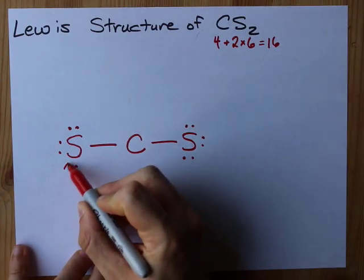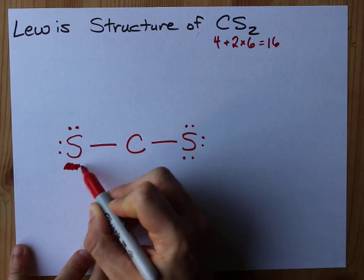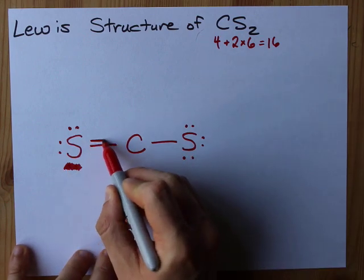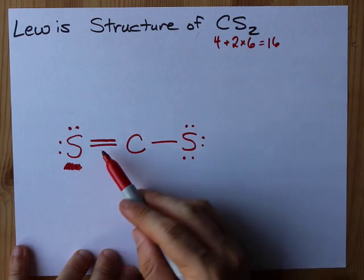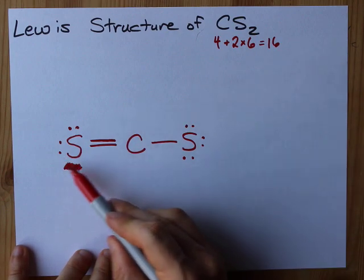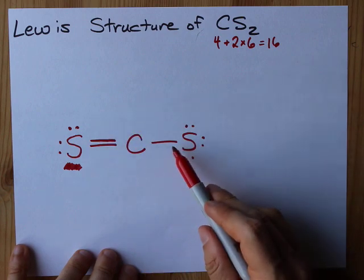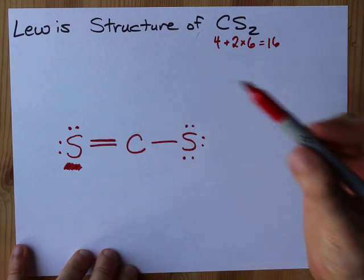Well, I fix it by taking these two electrons, which were originally only belonging to sulfur, and I share them with carbon. I now have a double bond here. This sulfur still has eight electrons around it, but now carbon has six. Two, four, and now the extra two makes six.